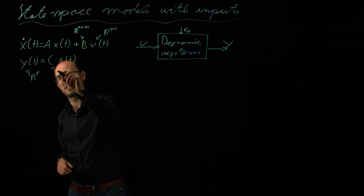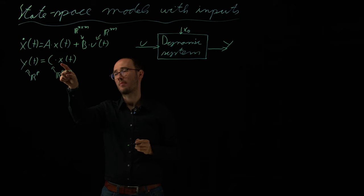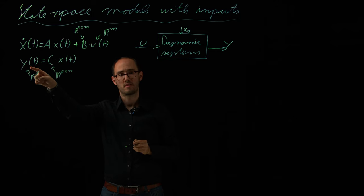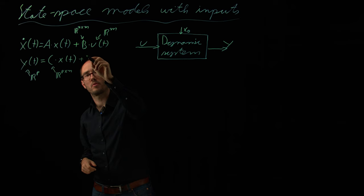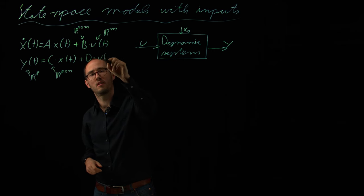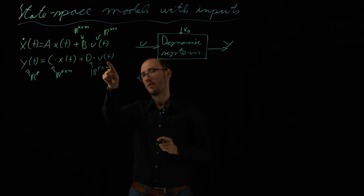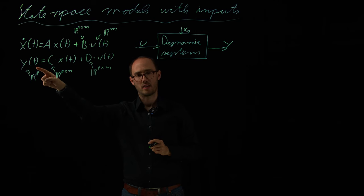So, here we consider r to the power of p different measurements. So, this is basically r p times n matrix, which will map the states towards the measurements. But sometimes, we also have a so-called feed-through, d times u of t. So, d is a so-called feed-through matrix, p times m.